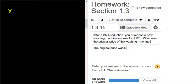So in this case, X is going to be the original price of the washing machine. So it'd be the OG price of washing machine. So OG price of machine. And we want to know what that was.